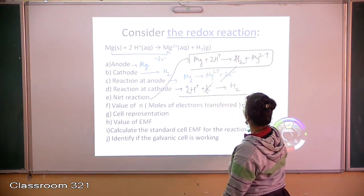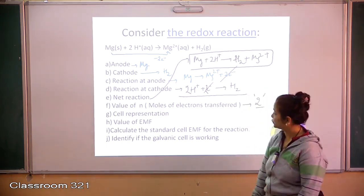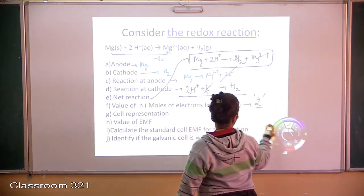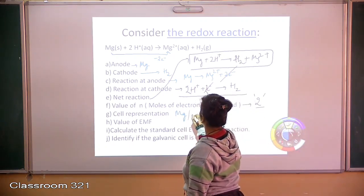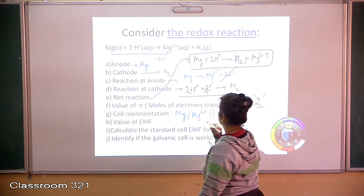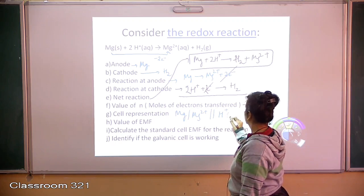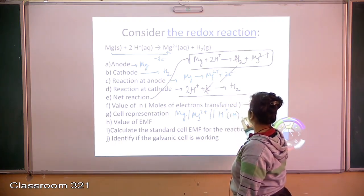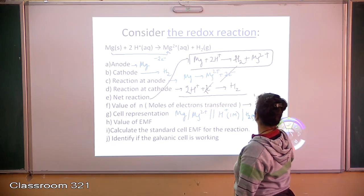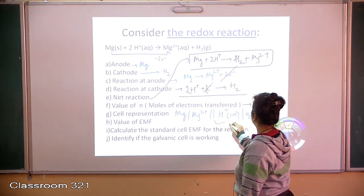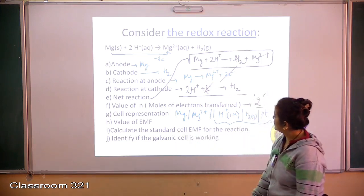The value of n — moles of electrons transferred — was 2, so n equals 2. For the cell representation: magnesium in contact with magnesium ions, salt bridge, in contact with H⁺ ions at 1 molar, which is in contact with hydrogen gas, which is in contact with platinum — this is how a hydrogen electrode is represented.